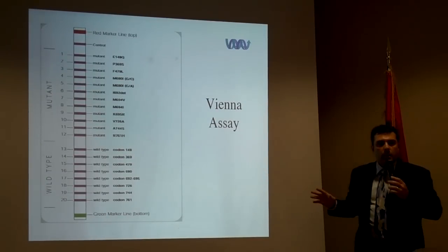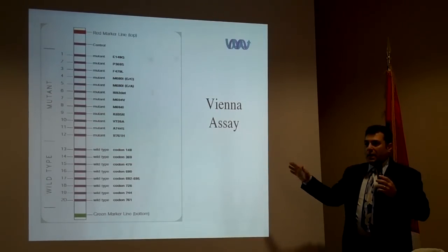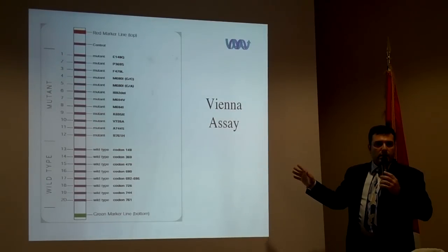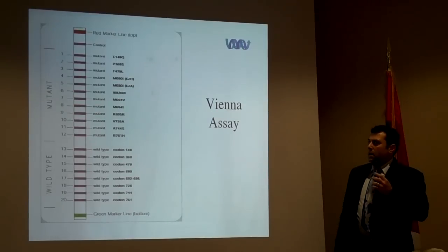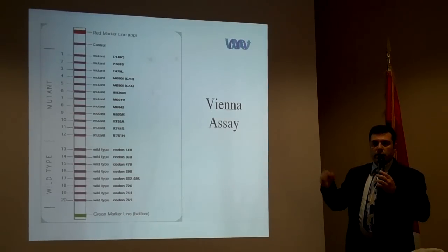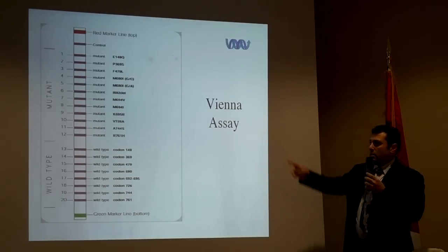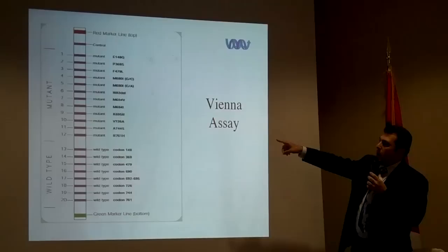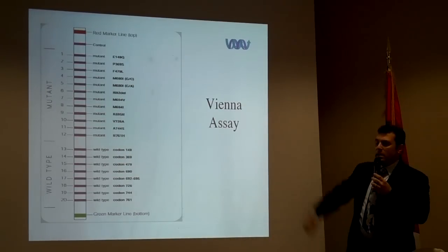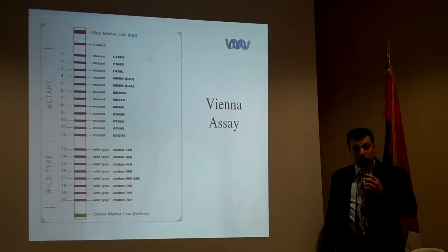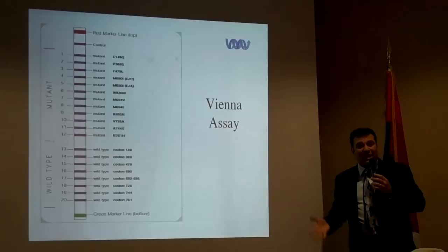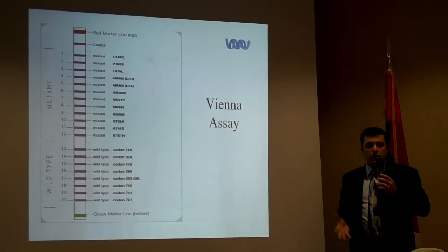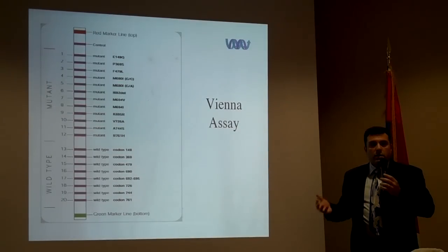This is the assay used in Armenia, purchased from Vienna — it's called the Vienna assay, made by an Austrian company. It's a very simple assay: you hybridize the sample to this piece and see the mutations. It covers about 12 mutations, whereas we know of about 27 total.